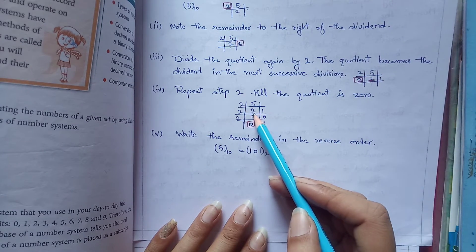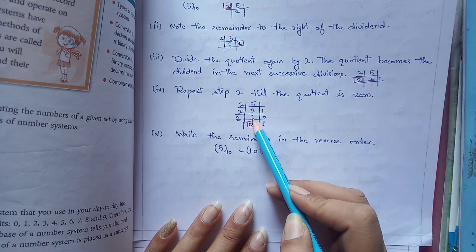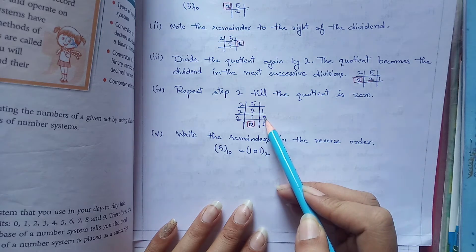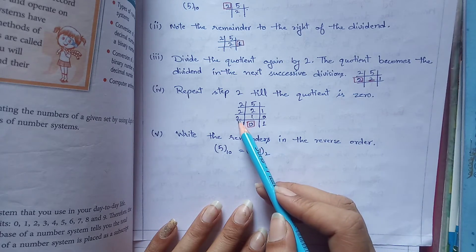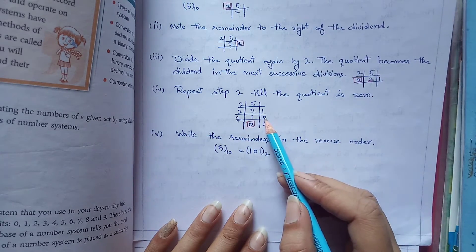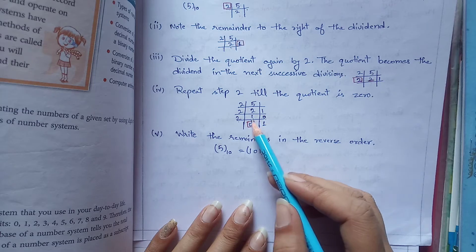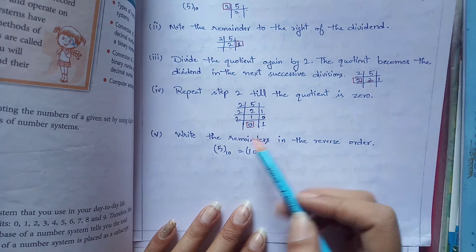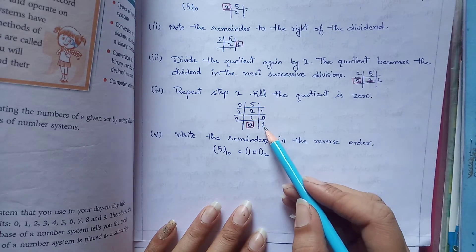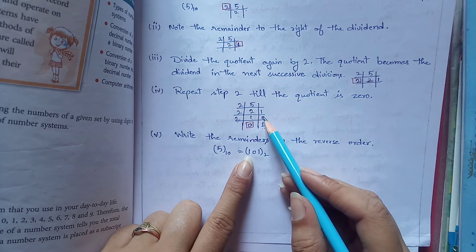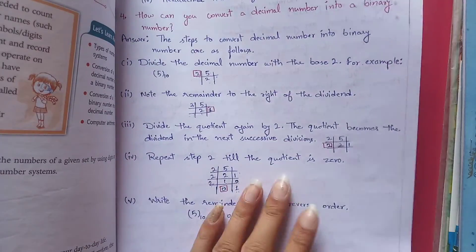So quotient is 1 and remainder is 0. Now I have quotient 1 but still I have to divide again from 2, so my quotient is 0 and remainder is 1. Now the fifth step is that we have to write the remainder in reverse order. That means we start from down. First we write 1, then 0, then 1, and the base is 2. That will complete your decimal to binary conversion.